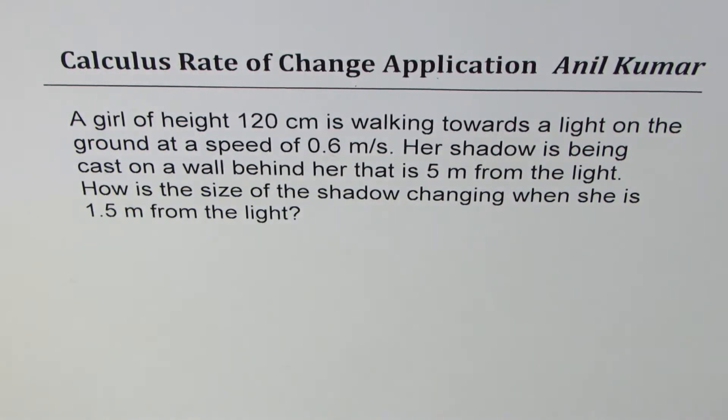Let me thank my student for posting this question for me. The question is: a girl of height 120 cm is walking towards a light on the ground at a speed of 0.6 m per second. Her shadow is being cast on a wall behind her that is 5 m from the light. How is the size of the shadow changing when she is 1.5 m from the light?